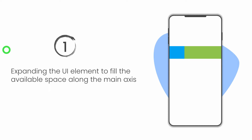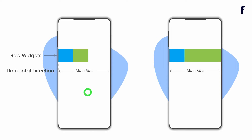One of the most common uses of the expanded widget is expanding a UI element to fill the available space along the main axis. As the name suggests, the expanded widget makes a child of a Row or Column expand to fill the available space. For example, in the case of a Row, the main axis is the horizontal direction. If we want this green container to fill the available size, it has to be wrapped inside the expanded widget.